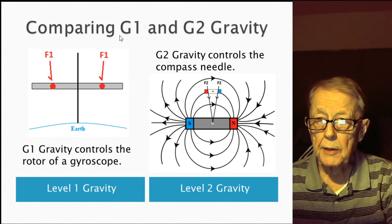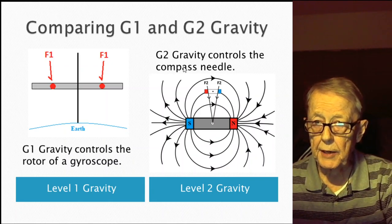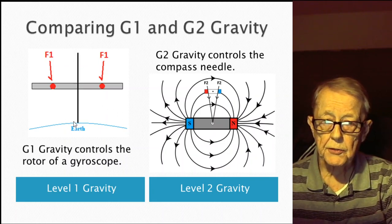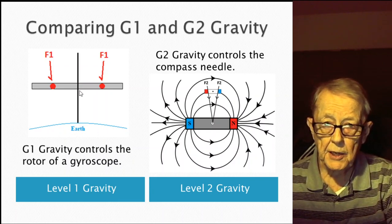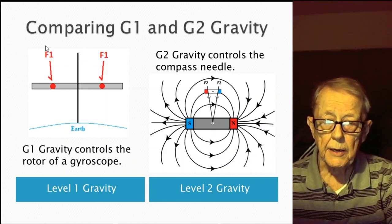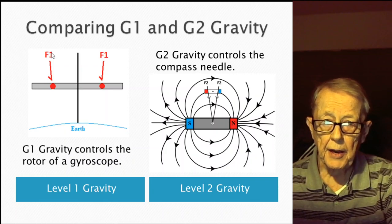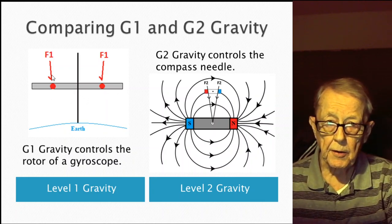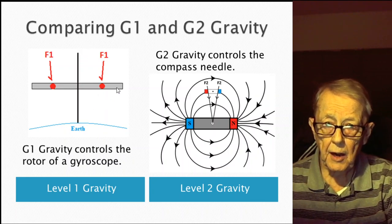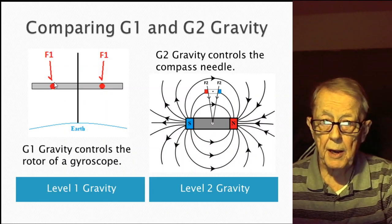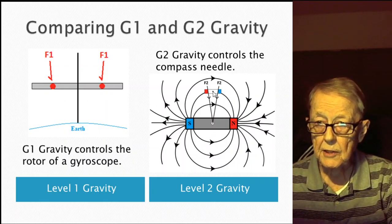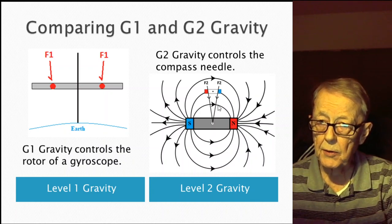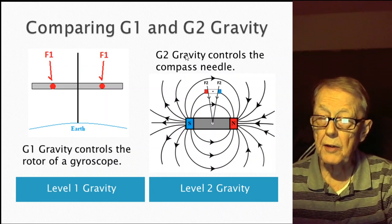Comparing G1 and G2 gravity: G2 gravity controls the compass needle, while G1 gravity controls the rotor of a gyroscope. In a previous video, I showed a gyroscope standing perfectly vertical on the Earth. F1 is the net force of G1 gravity and F2 is the net force of G2 gravity. If the gyroscope is perfectly aligned and the rotor is balanced in terms of mass, it sits horizontal. G2 particles move at very high speed, while G1 particles move at speed C.